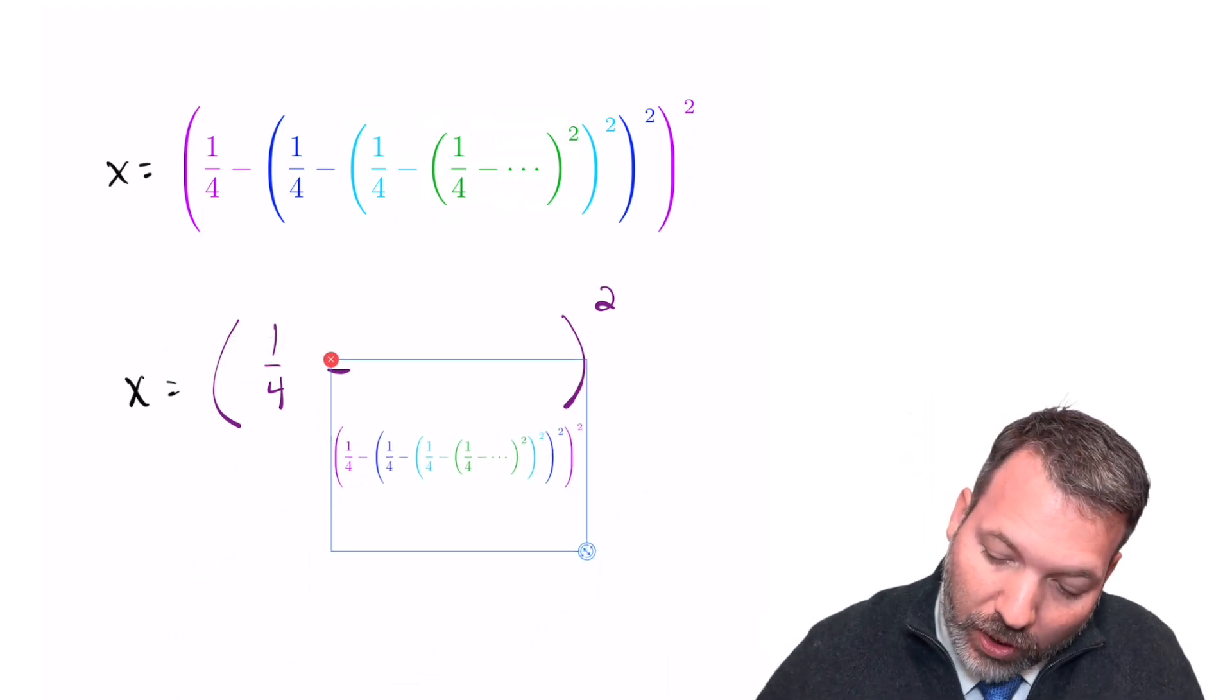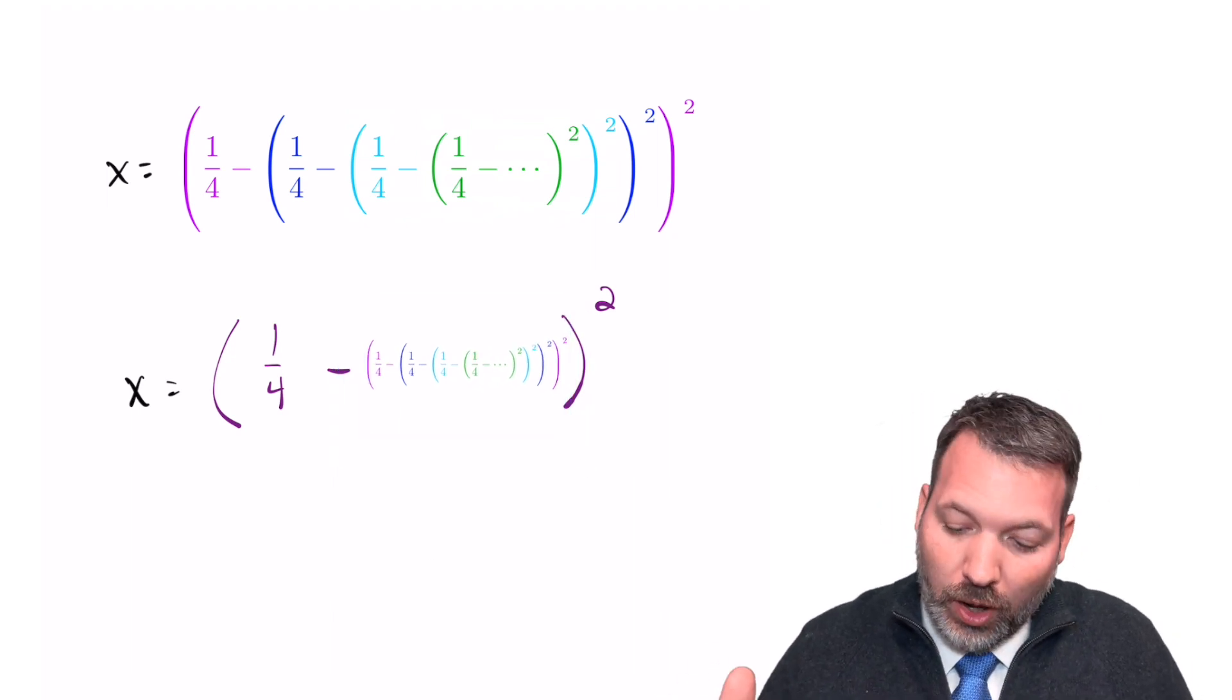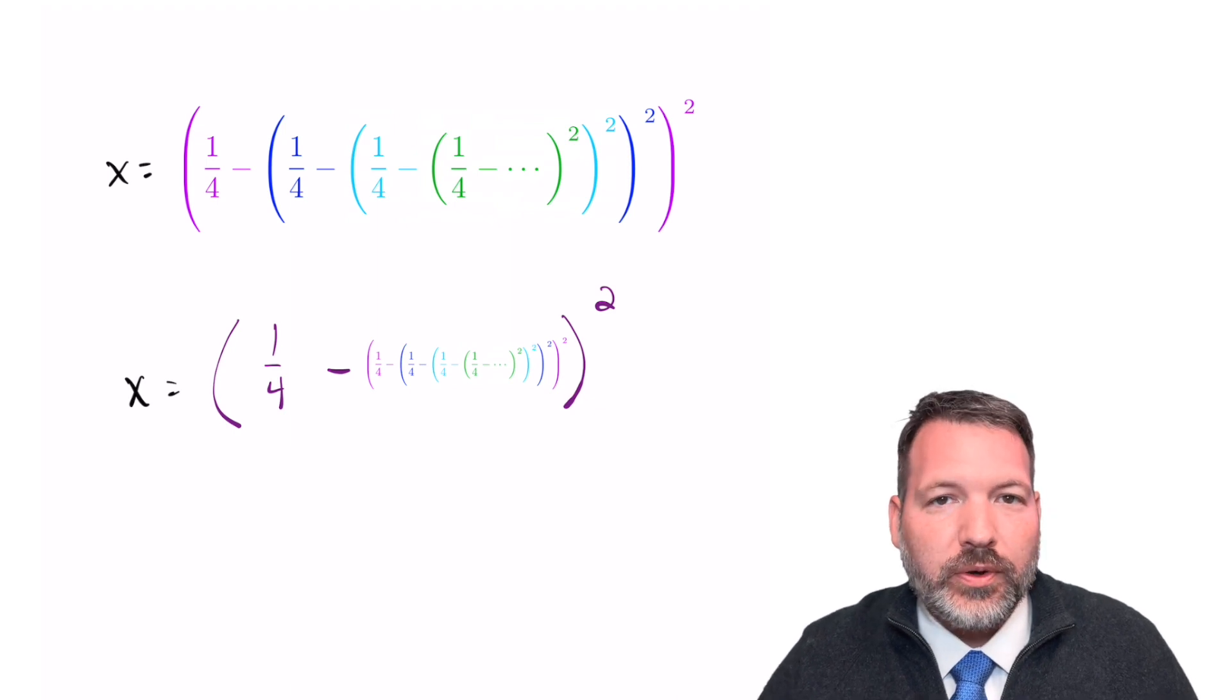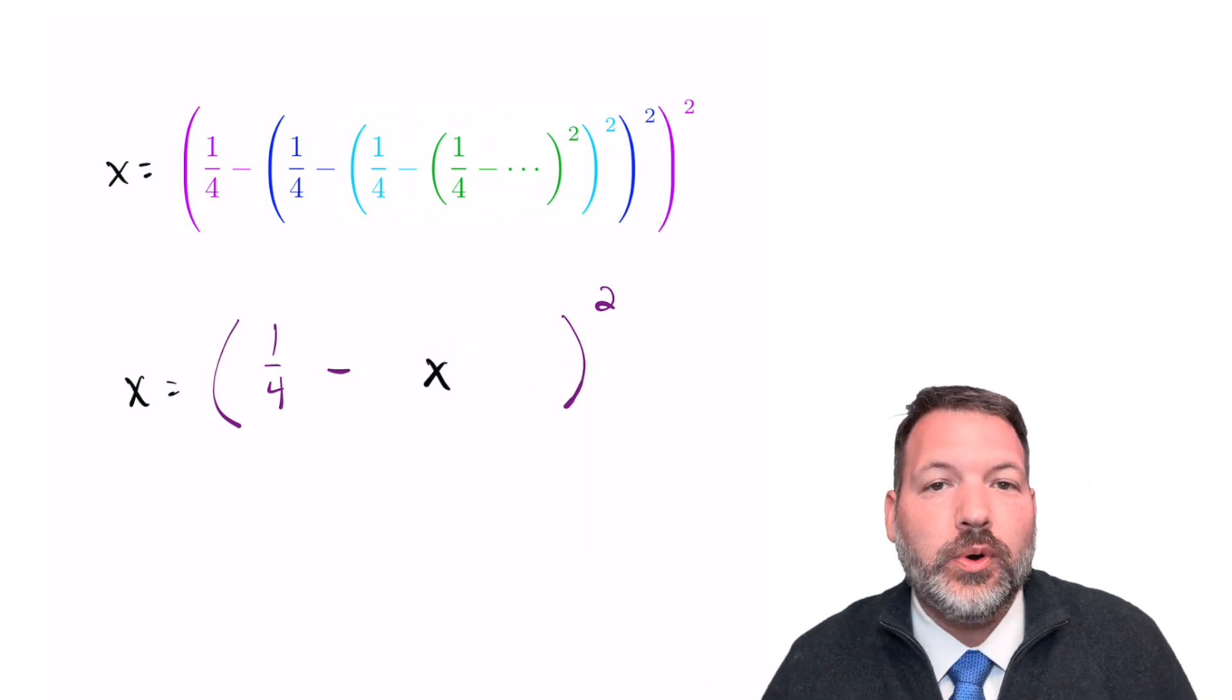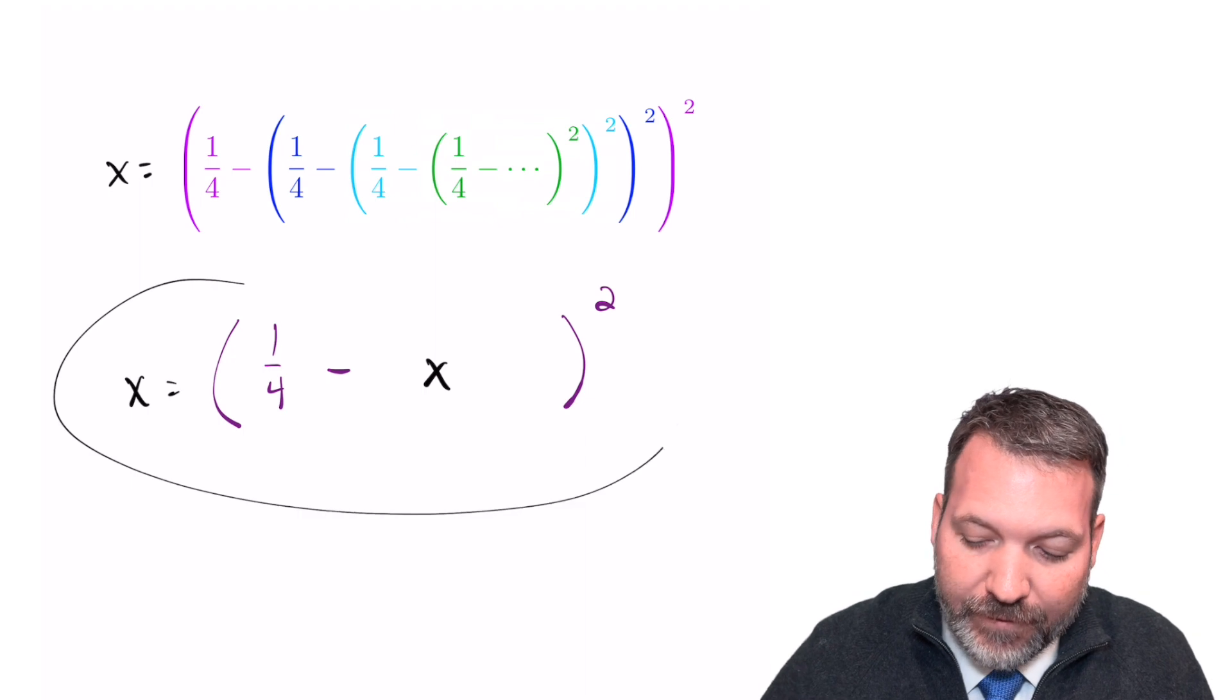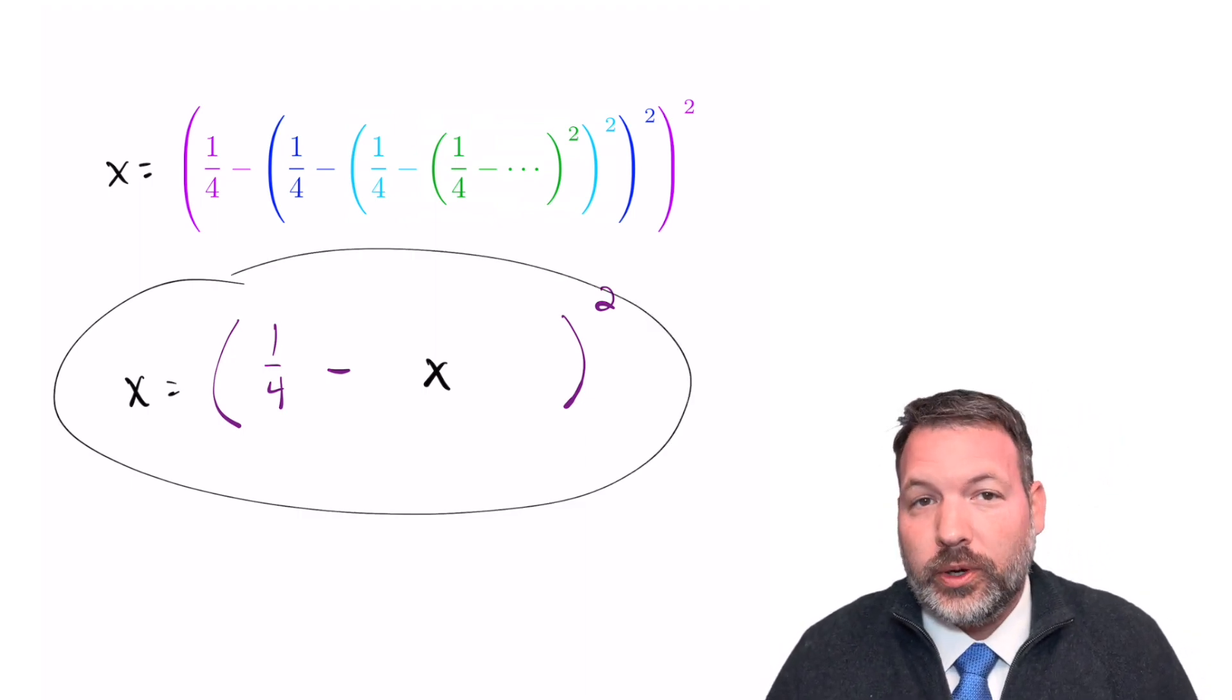Again, we're calling it x, and we can recompute x as one-fourth minus the value of that series squared. We can zoom out one level deeper into this series and say that x is equal to one-fourth minus that whole series squared. But we know what the value of this series is. We called it x. So we can say x is equal to one-fourth minus x squared.